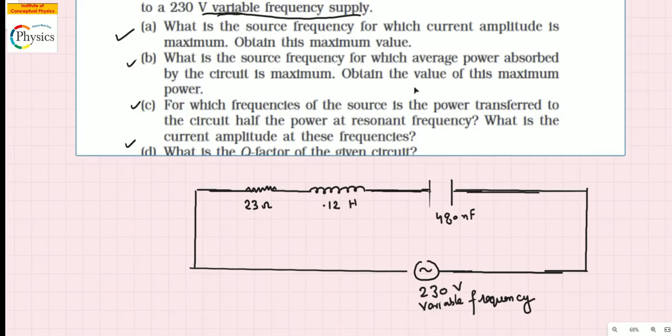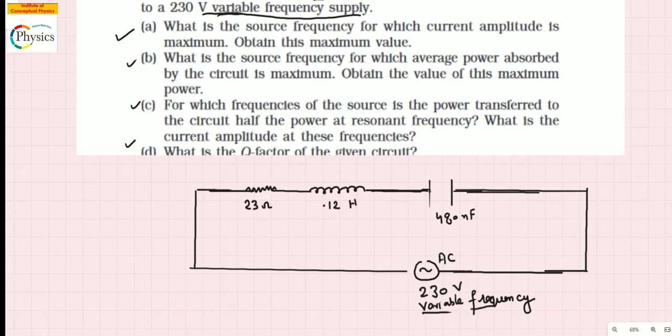This question is from the chapter of alternating current, topic: LCR series circuit. An LCR series circuit has been drawn with values taken from the question. One of the most important things to notice is that a variable frequency AC source has been applied. Generally in AC circuits you see 50 Hz, but in LCR series circuit questions the frequency is generally variable because the whole experiment is based on variable frequency.